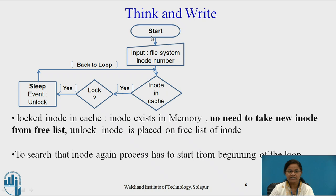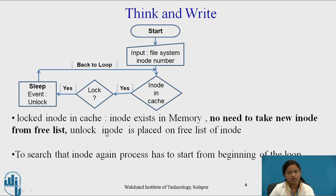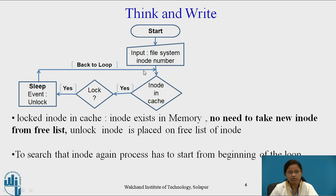In the iGET algorithm, the input is the i-node number. Check whether it is present in the cache. If it is present, check whether it is locked. If it is locked, then the process has to sleep — because that i-node already exists in memory, there is no need to take a new i-node from the free list. Whenever a process unlocks the i-node, that i-node is automatically placed on the free list. So to search for that i-node again, the process has to start from the beginning of the loop. The process enters sleep state by setting a flag in the in-core copy of the i-node.